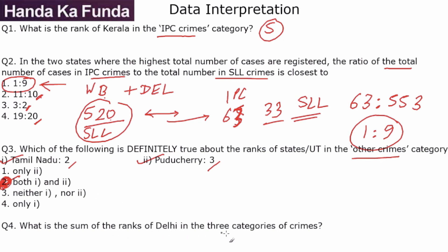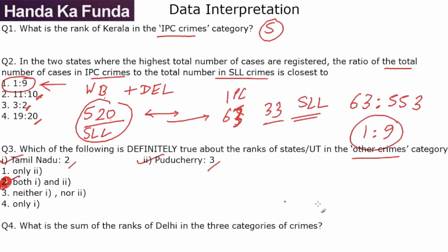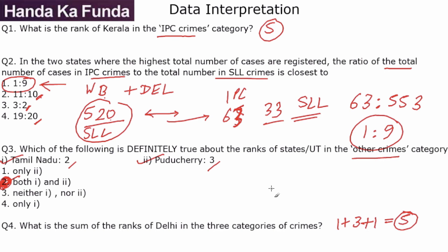Question 4: What is the sum of the ranks of Delhi in the 3 categories? We found Delhi's ranks as 1 in IPC, 3 in SLL, and 1 in other crimes. So the total sum is 1 plus 3 plus 1, which equals 5. A straightforward question that should definitely be attempted in the exam.